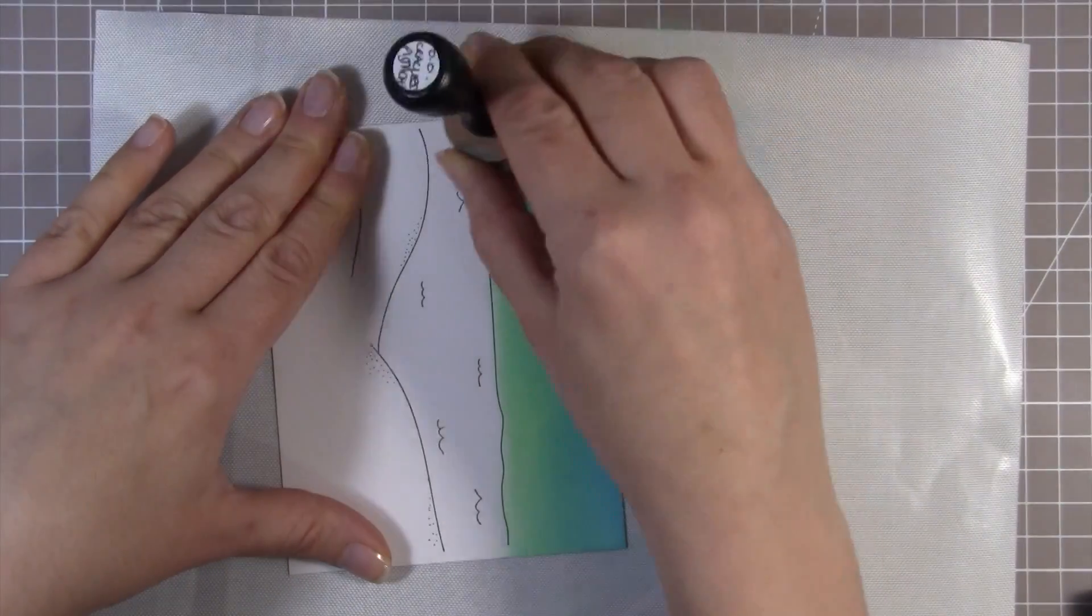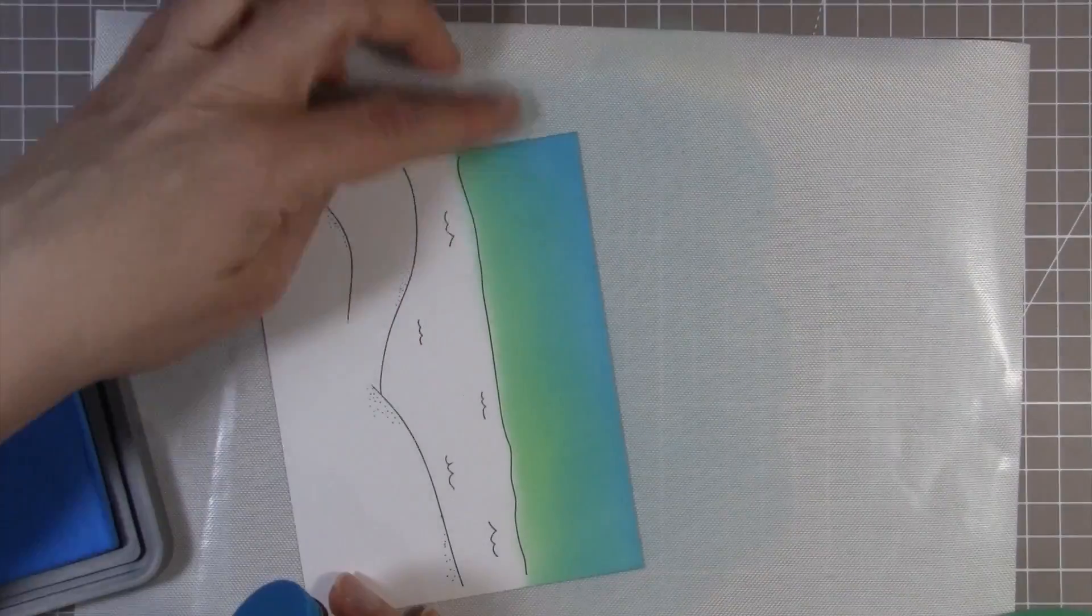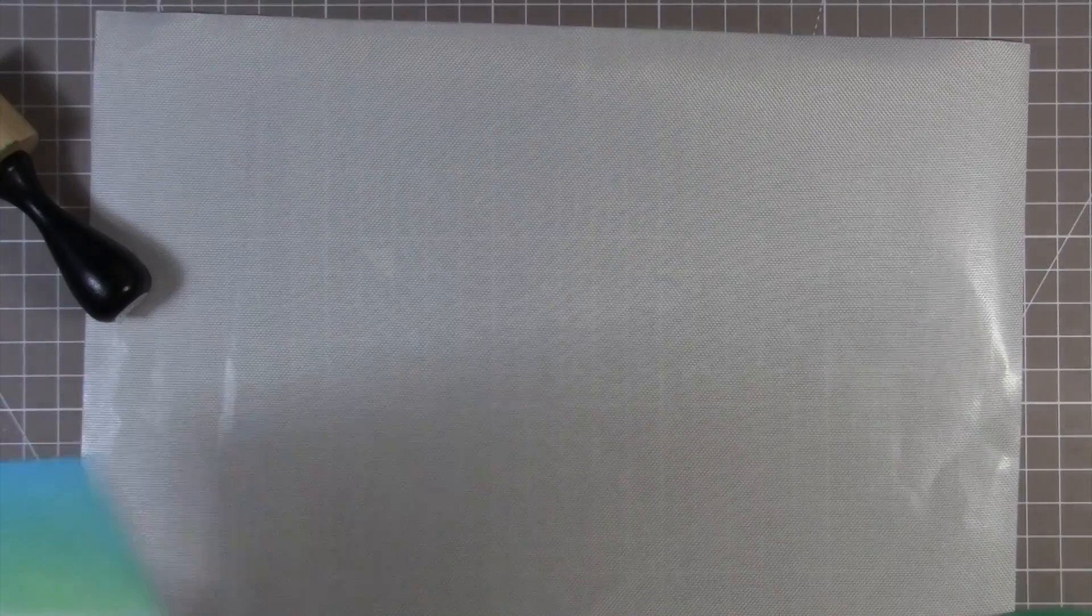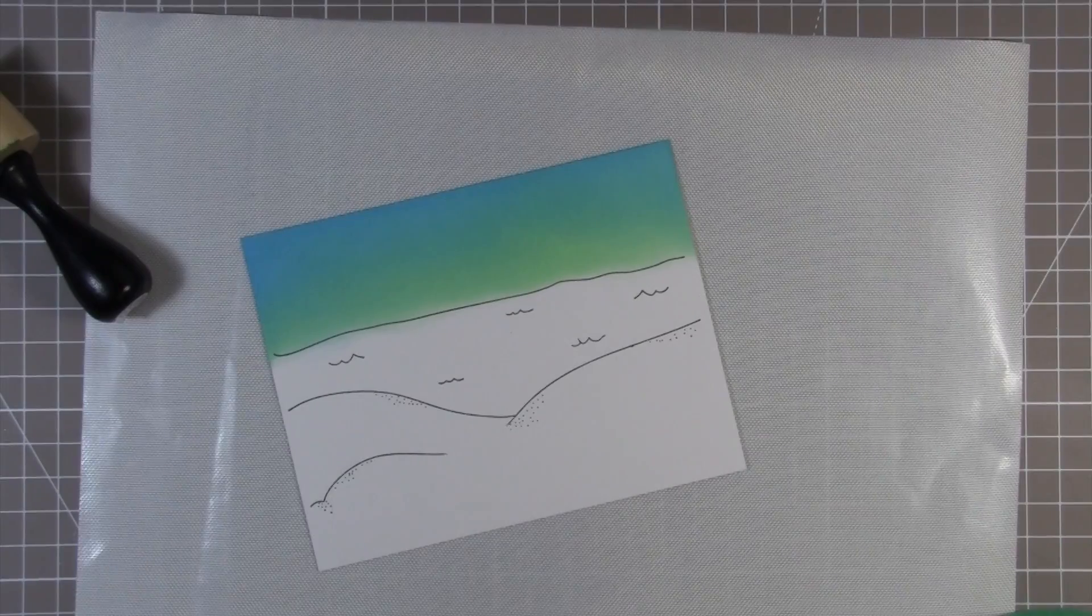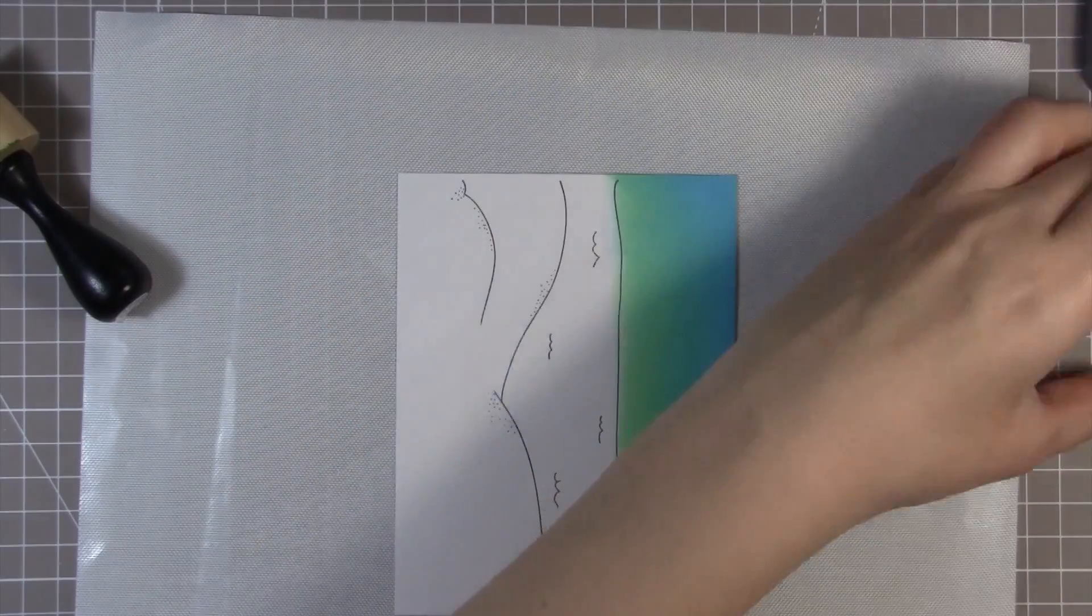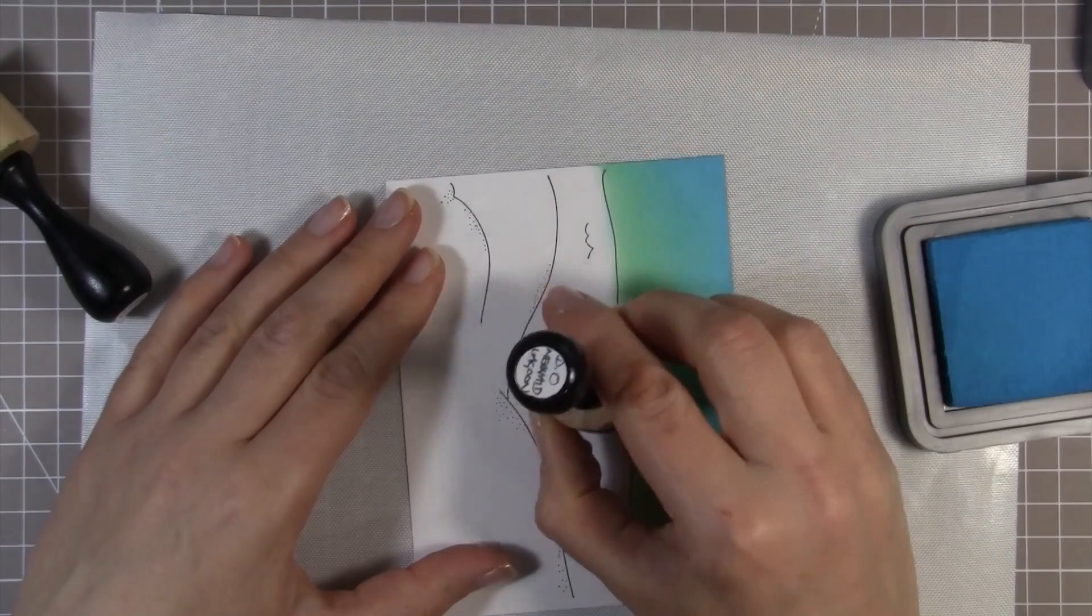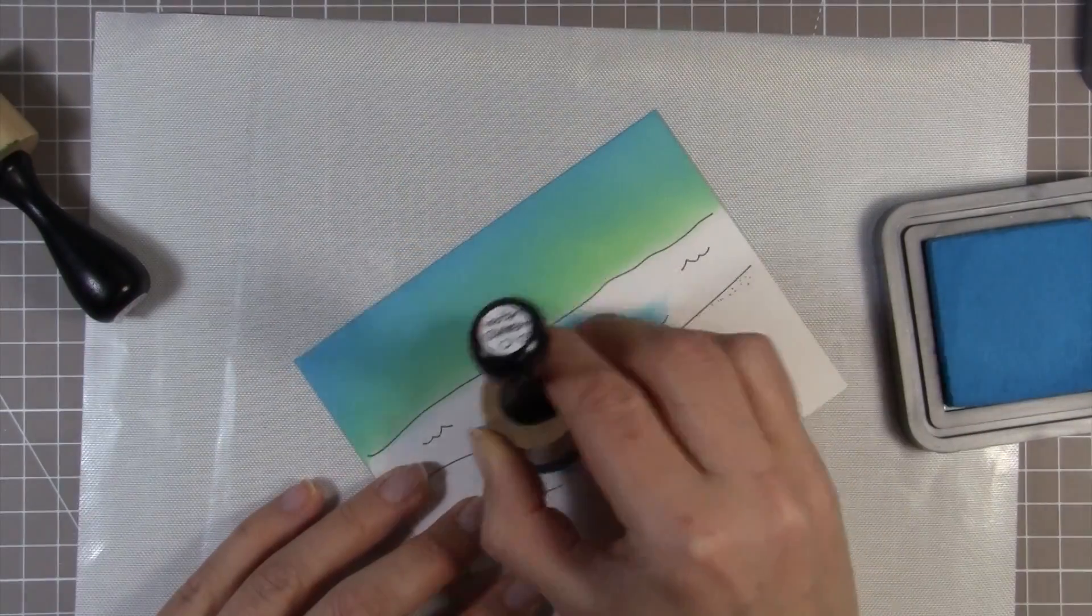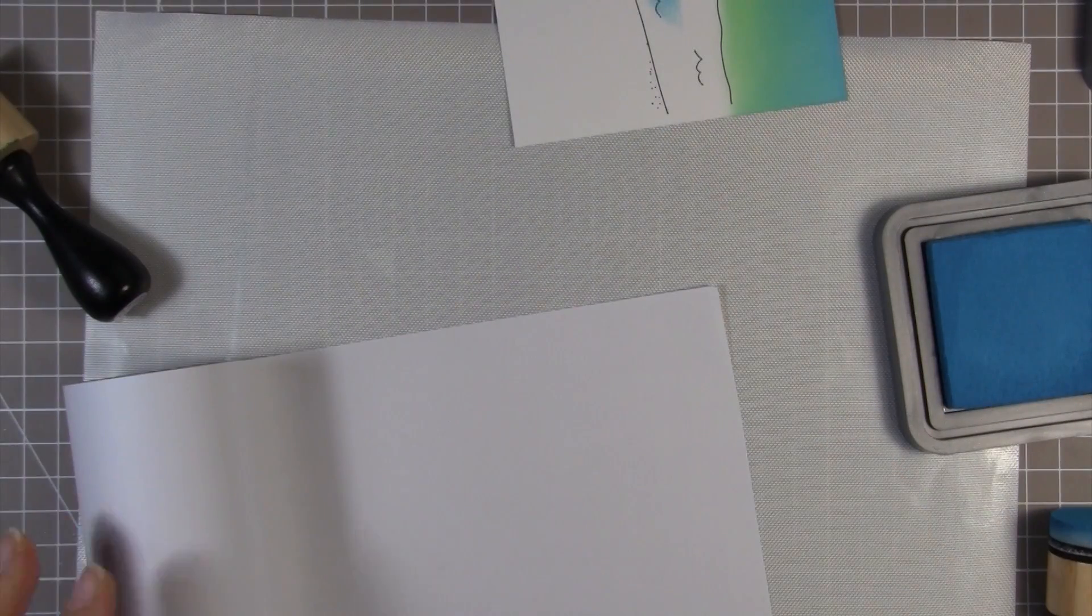That worked fine for the sky area because that's fairly simple. There's no rough bits, no weird little nooks and crannies to get into. Then I realized that when I started on the sea, this isn't going to work so well. So I actually stopped and grabbed my eclipse masking paper and quickly created a mask so that I could mask off that sky and the beach and do the sea, and then mask off the sea and do the beach. Don't be me, make the mask from the outset.